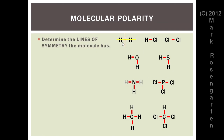H2 has two lines of symmetry. HCl, though, only has one line of symmetry. Water has two lines of symmetry. Hydrogen sulfide has only one — there is no hydrogen at the top or side to reflect, so there's only one line of symmetry. NH3 also has only one line of symmetry, and so does PCl3.